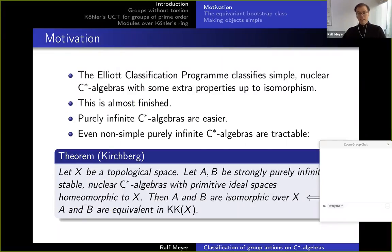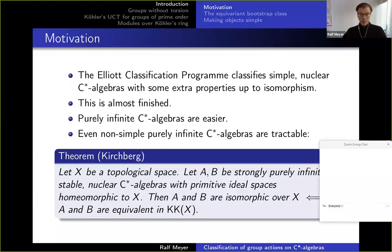Let's begin with the introduction and motivation. All this started with the Elliott classification program, which is about simple nuclear C*-algebras with extra properties like maybe purely infinite, or stable, whatever you need for your particular result — you want to classify these C*-algebras up to isomorphism. Recently there has been a lot of progress on this general program and I'd say it's almost finished.